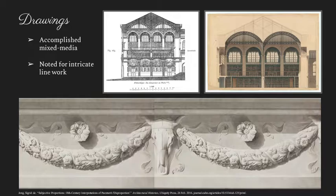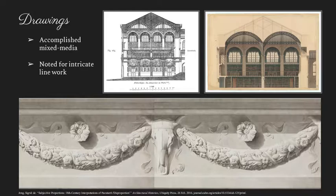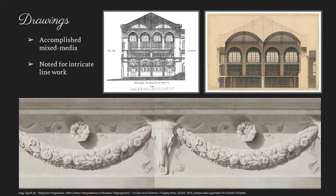Looking at some of his drawings, they are very complicated pieces — incredible to stand on their own. He used mixed media and was very accomplished in that area, one of the first to be truly successful with it. He's noted for his intricate linework — these massive drawings that he would put hours and days into. The lower picture is a drawing he made while in Rome during his Prix de Rome, depicting a mausoleum. He did many of these individual mausoleum drawings with intricate design work, capturing a lot of that detail in his early drawings.